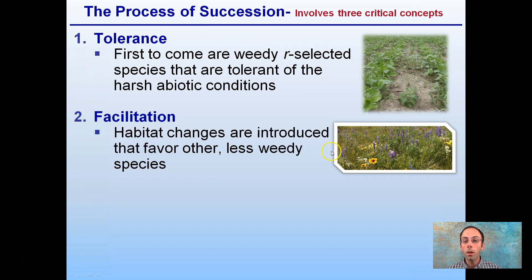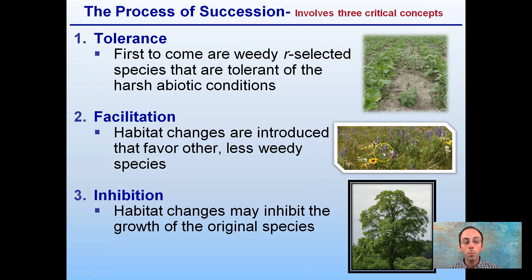We've gone from just pure weeds to the development of some flower species — less weedy and getting more established. You can see there's no barren soil pictured in the facilitation step. Lastly, we have inhibition — a habitat change that may inhibit the growth of the original species. A tall tree grows and produces large leaves that shade out other potential species that were responsible for the establishment of that area. The tall tree will inhibit these tolerant species or even the less weedy species that started to develop.